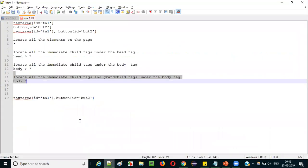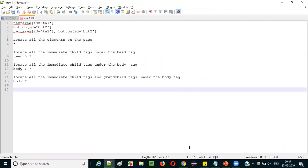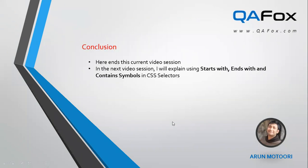So that's how you can use comma and asterisk symbols in CSS selectors. We've covered all the examples with practical demonstrations. In the next video session, I will explain other symbols used in CSS selectors — such as starts-with (caret ^), ends-with (dollar $), and contains (asterisk *) — and what their purpose is. See you in the next session. Thank you, bye.